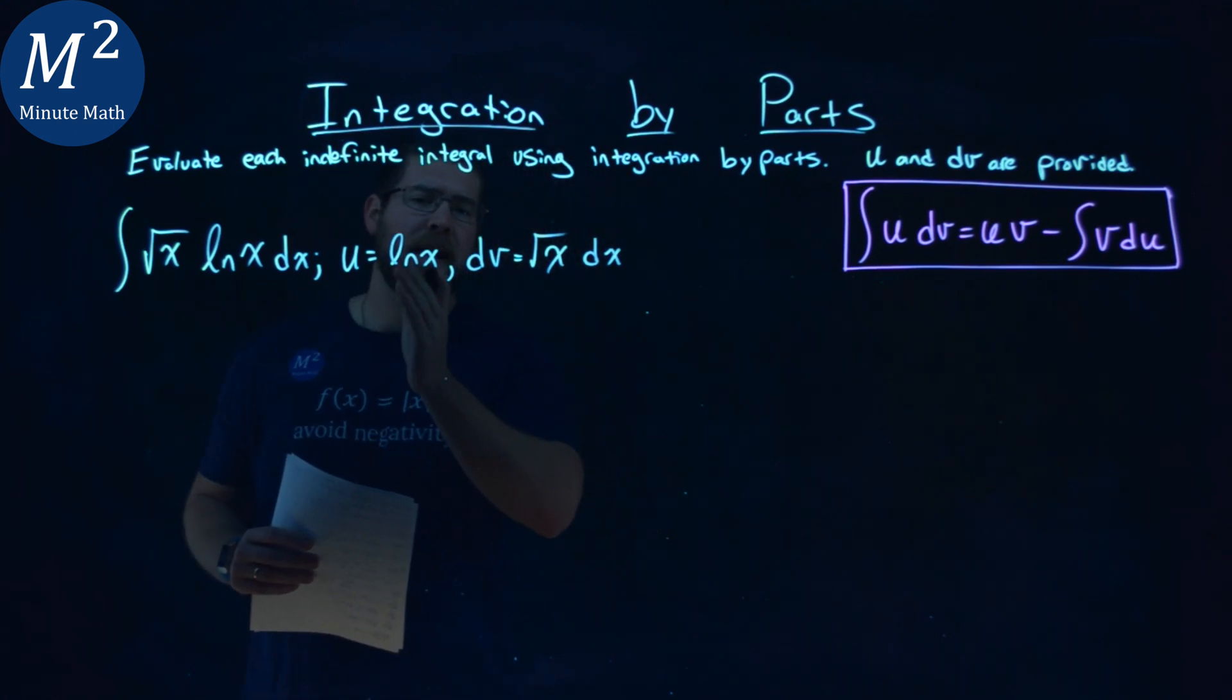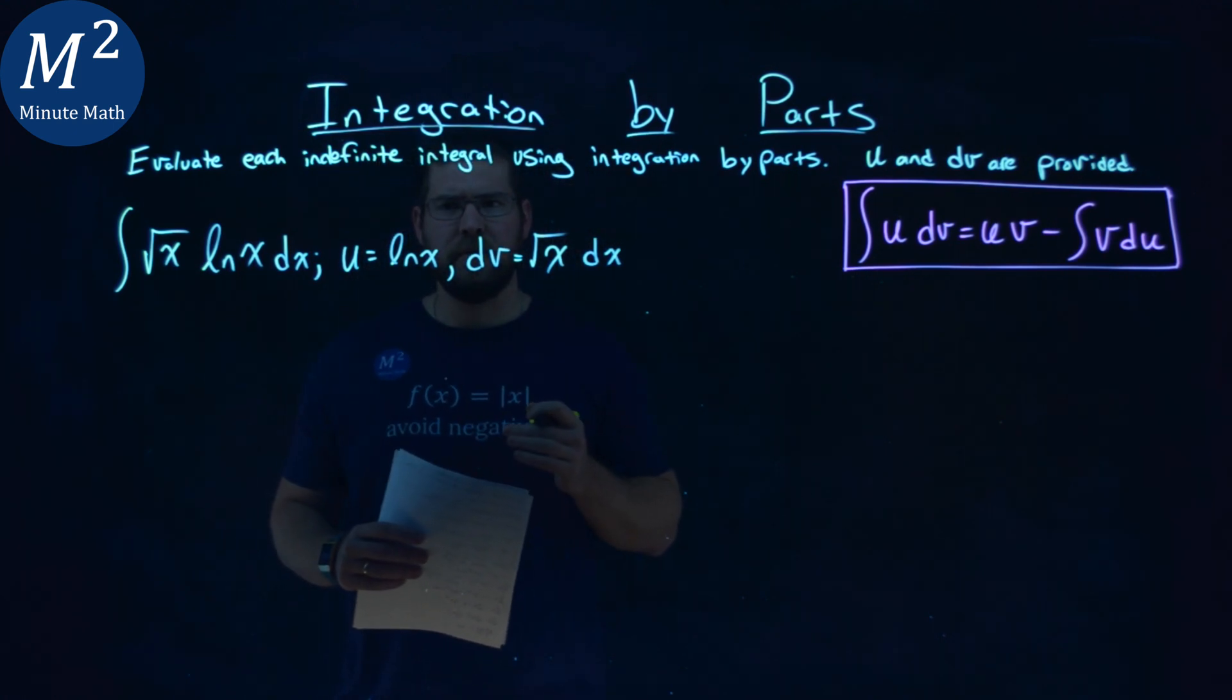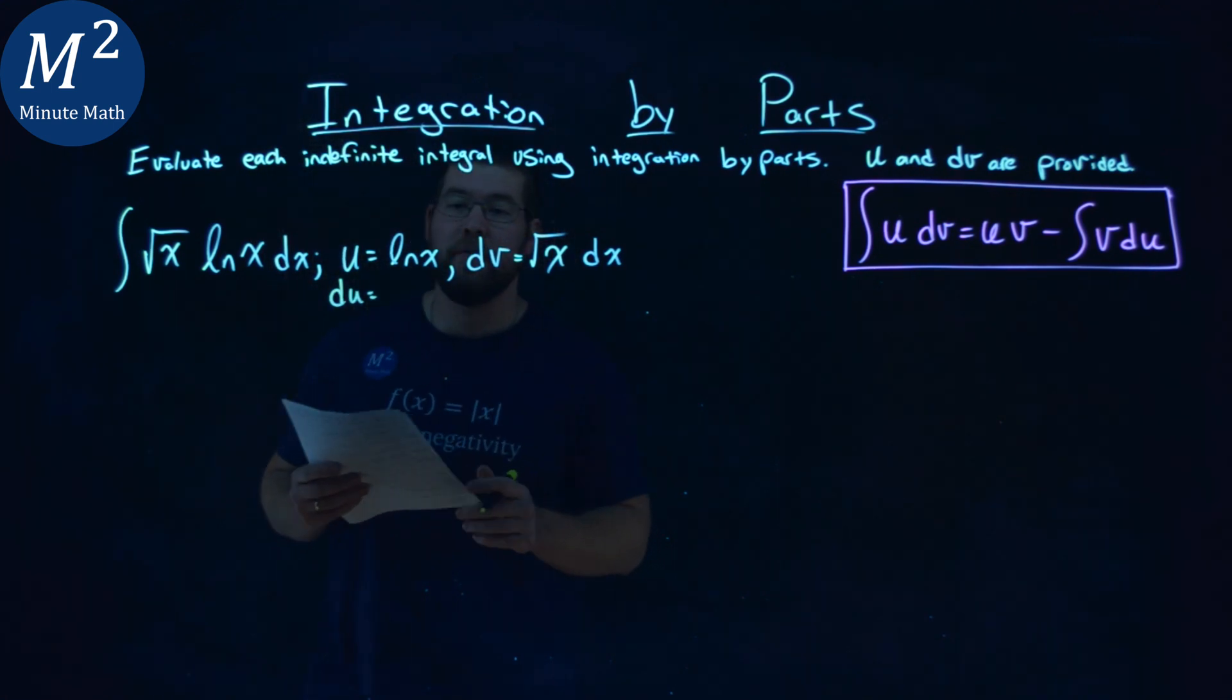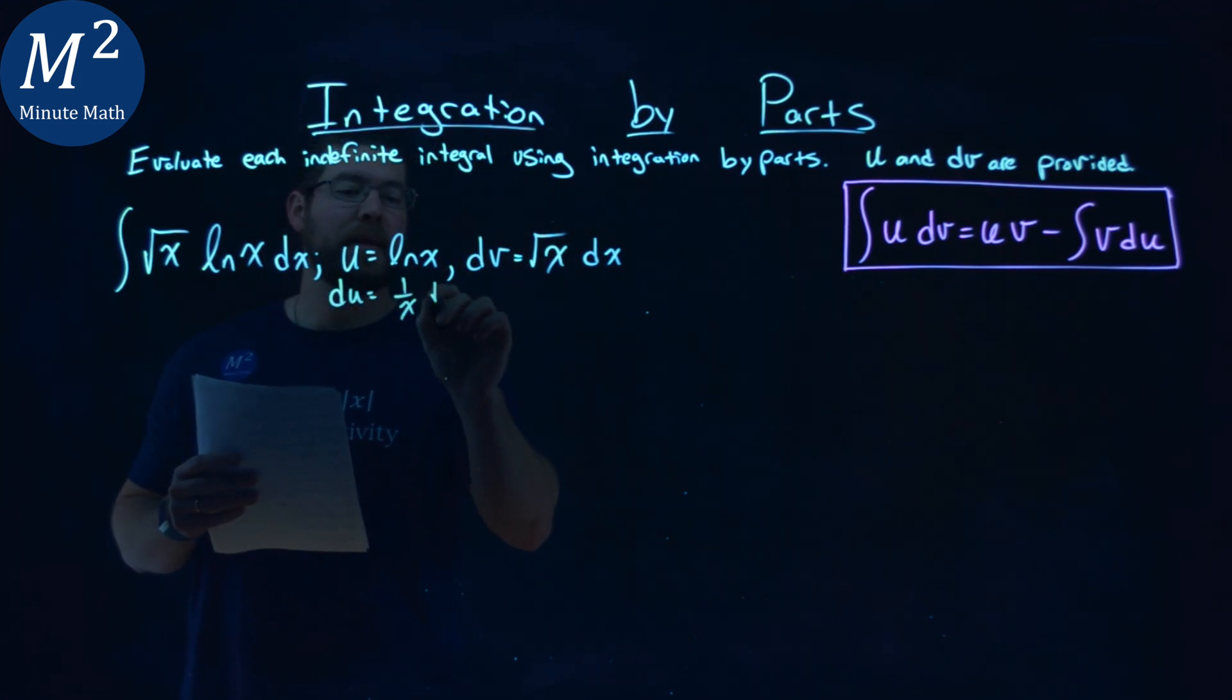Now, we're already given a u and our dv value to use here, so let's go find our du value first. Natural log of x, the derivative of that, is 1 over x dx.